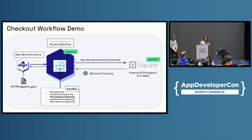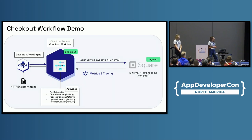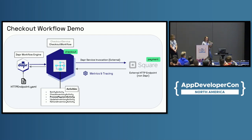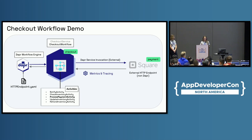You can see on the slide here I have the checkout workflow, and what this is doing is registering a number of activities — the notify activity, the check inventory activity, process payment, update inventory, and then refund. The one I really want to call out is the process payment activity, because typically we would be calling an external service to process the payment. In this case, we're calling out to an external HTTP endpoint — the Square payment service from the application.